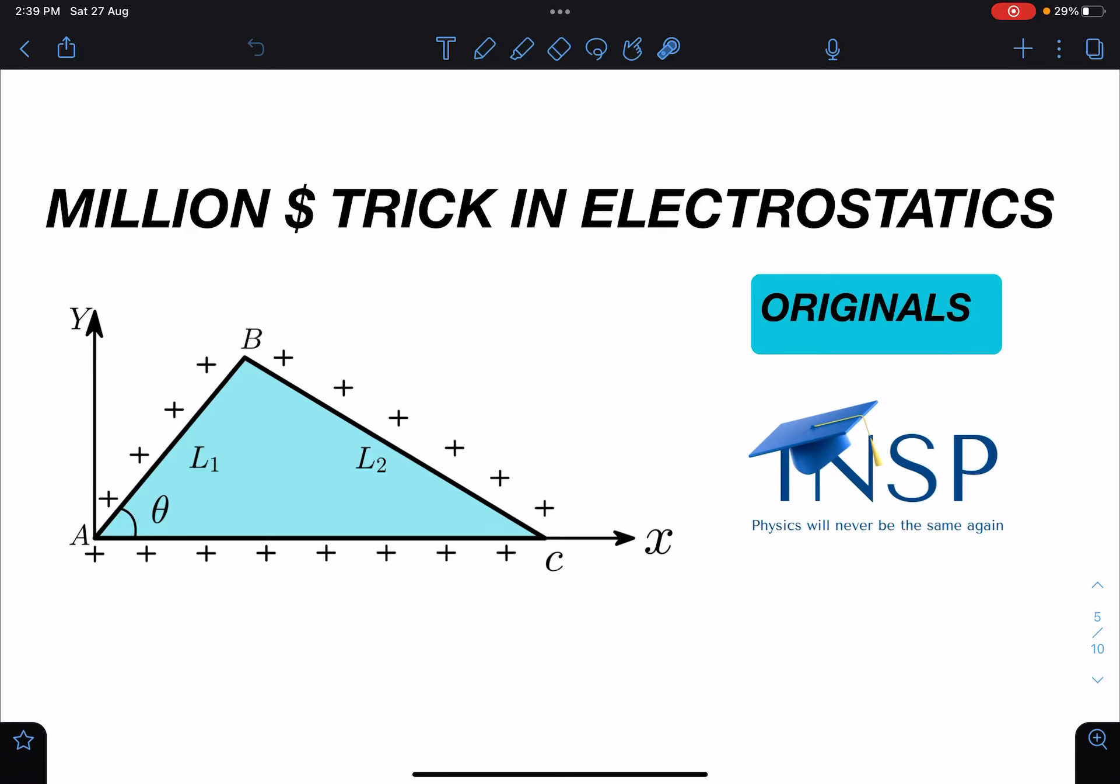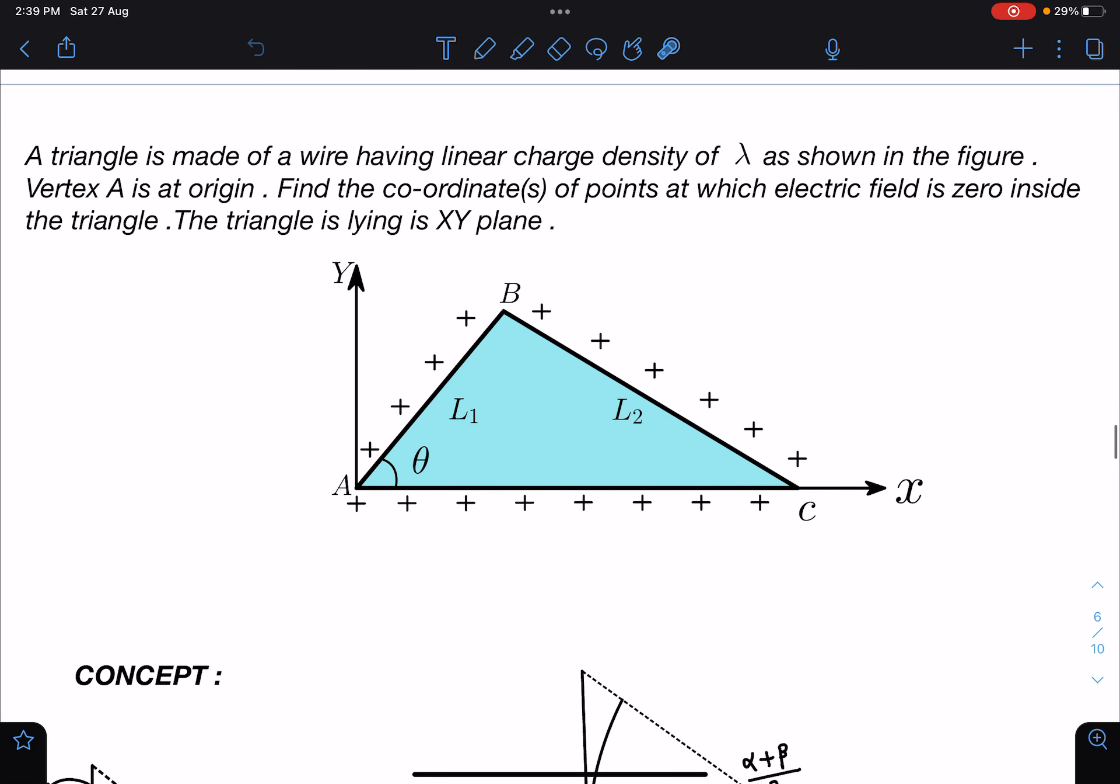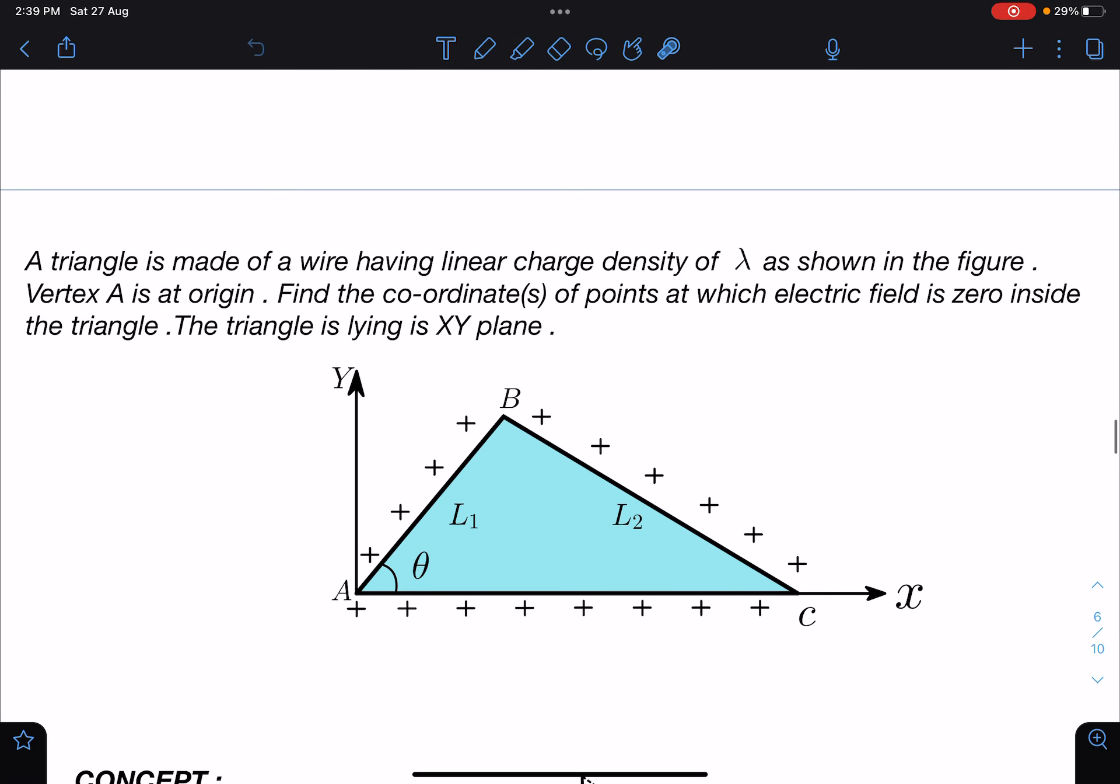This is Nitin here and today I have come with a very amazing trick on electrostatics. It's an original problem. A triangle is made of wire having linear charge density of lambda as shown in the figure. Vertex A is at origin.